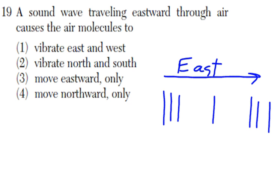Now as the wave travels east, these particles, or these vertical lines, vibrate in the east and west direction.